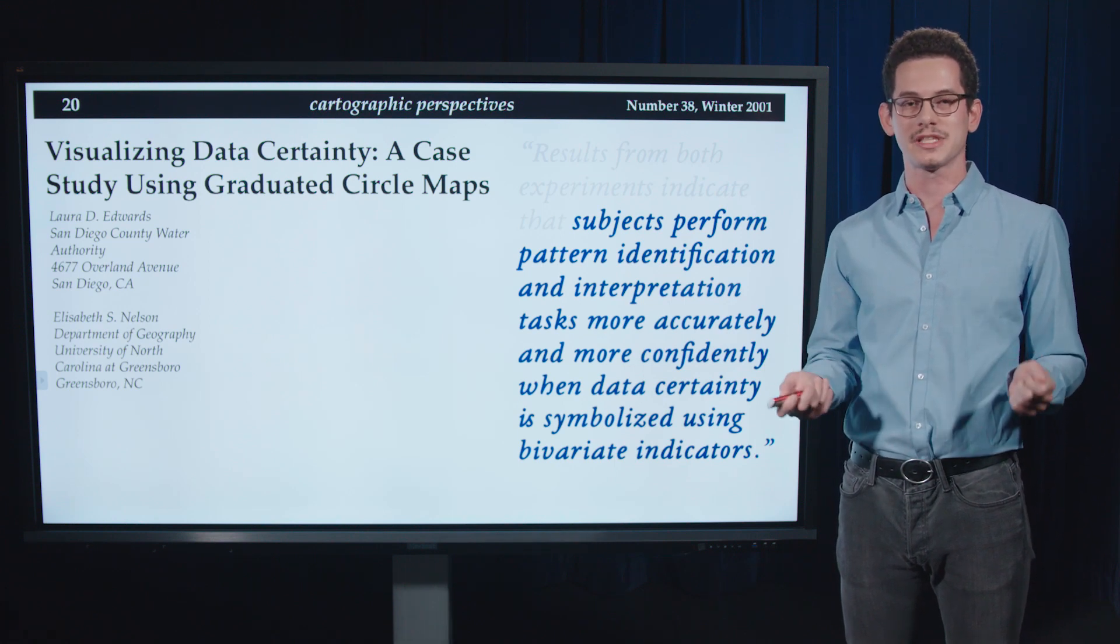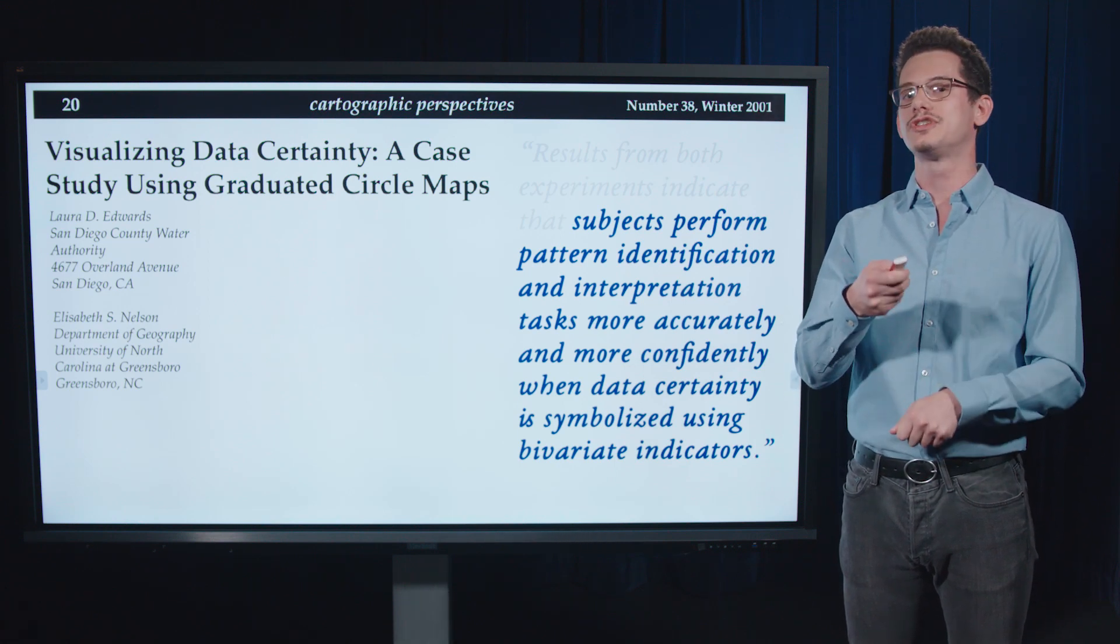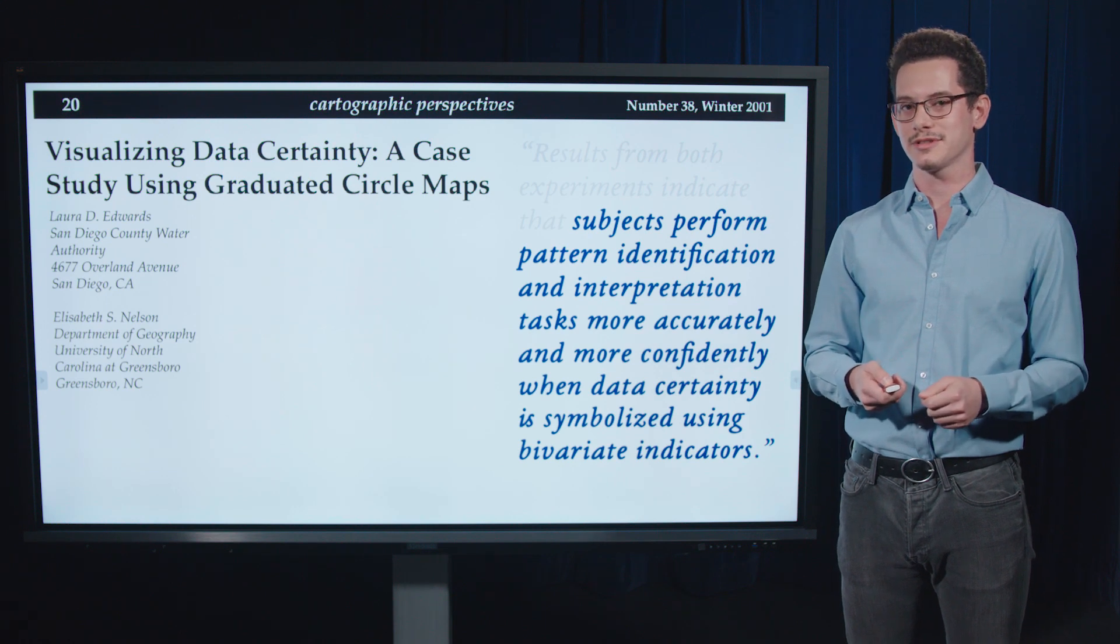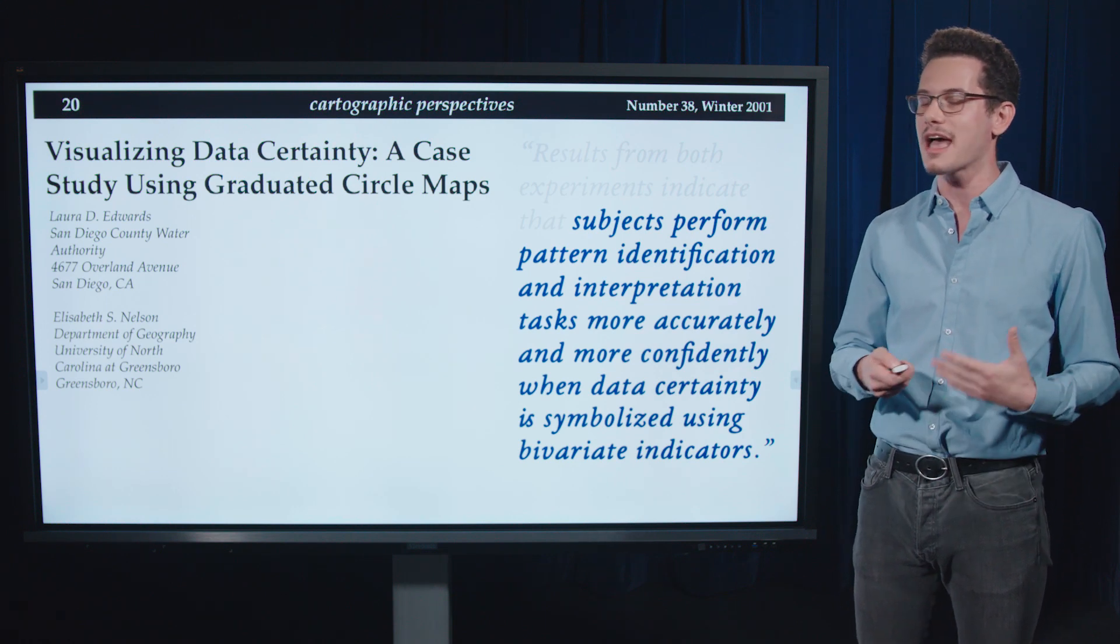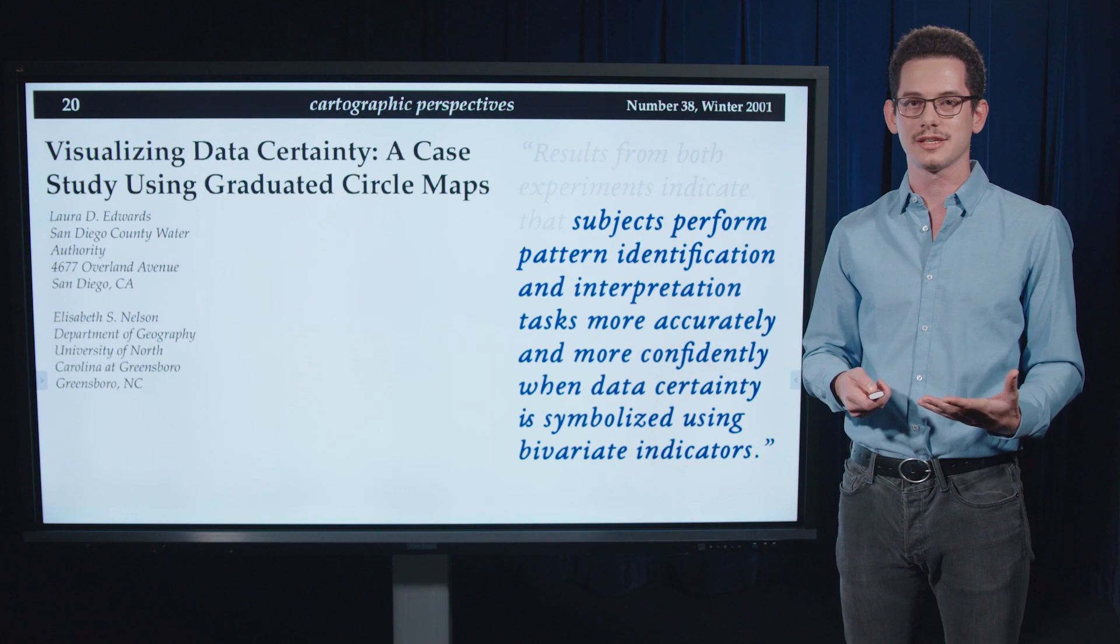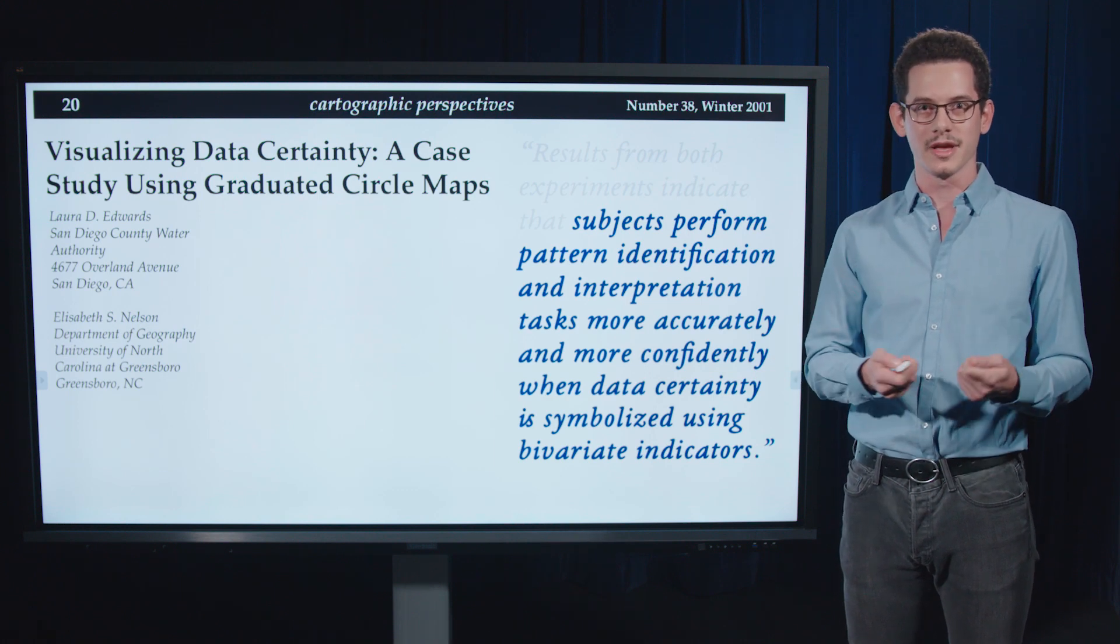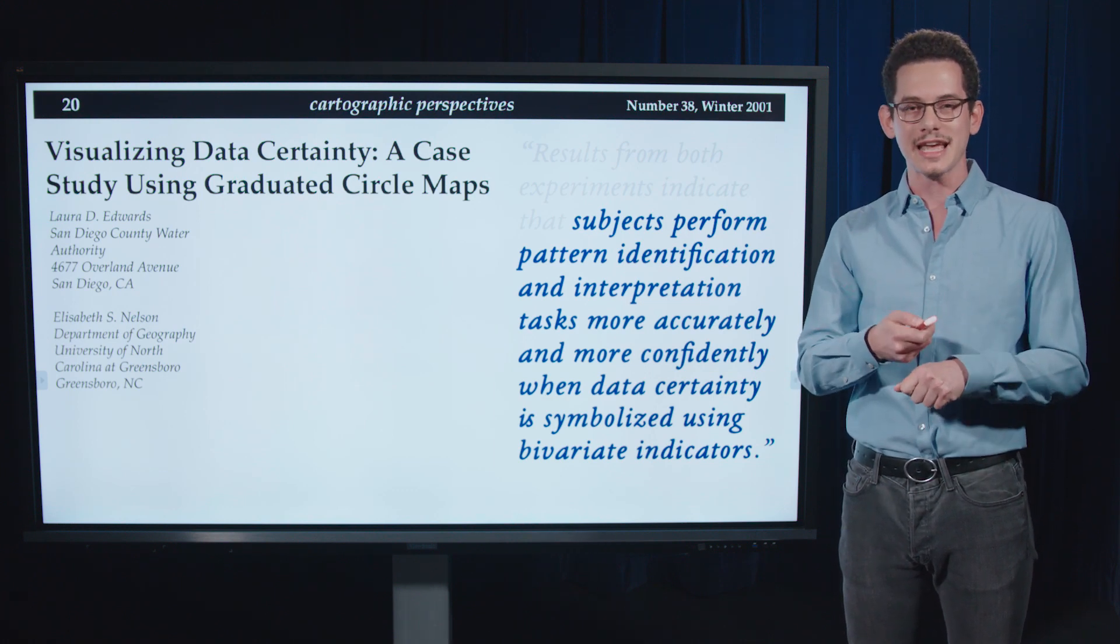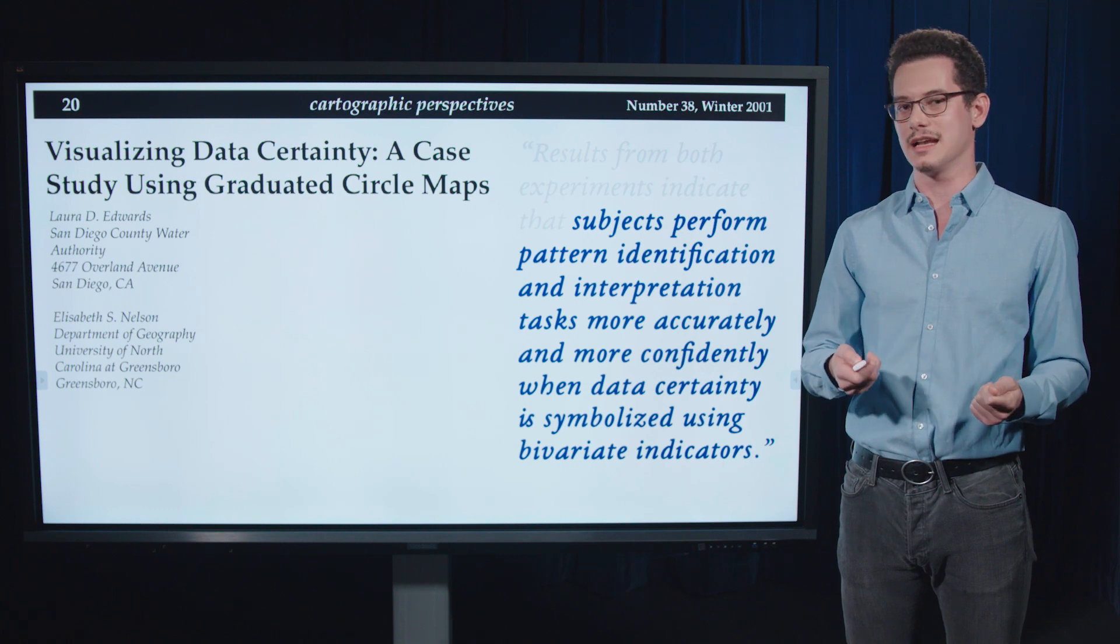So rather than in two different maps, in the same map, but with two different visual variables. Okay, so we have some evidence that we should consider this bivariate form showing in the same map both the forecast and its uncertainty.